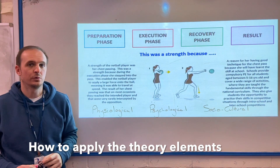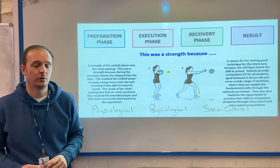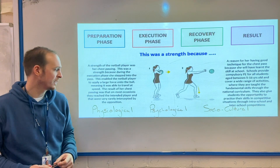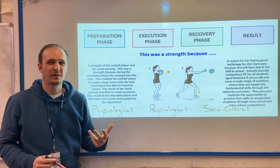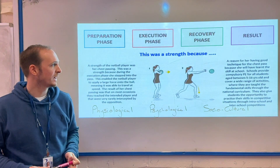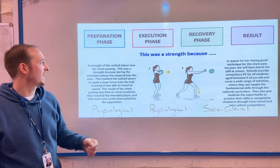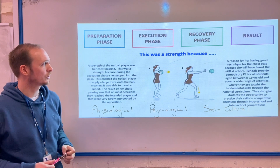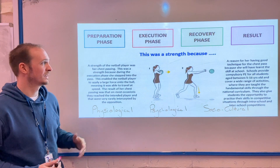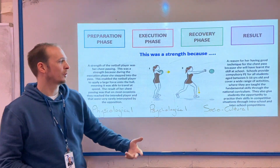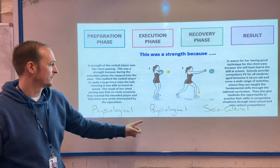In addition to highlighting your skills as either strengths or weaknesses, talking about the reasons for that, and talking about the effect on performance, you also need to demonstrate your knowledge of the different elements of the theory areas we cover — the physiological, psychological, or sociocultural. For each skill you highlight, part of that justification needs to really demonstrate some of your knowledge. In this example, we've looked at a netball player with a good quality netball chest pass: the pass is nice and strong, they've got a good execution phase, they're applying a large force to the ball, and the ball is getting to where it needs to go, leading to increased possession for the team.